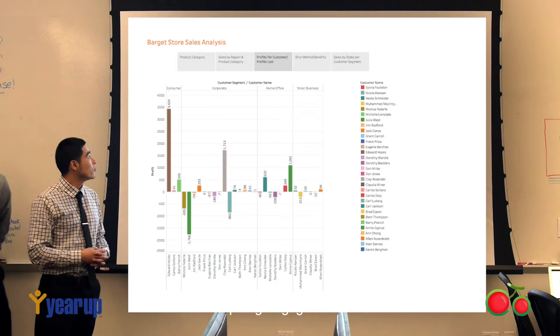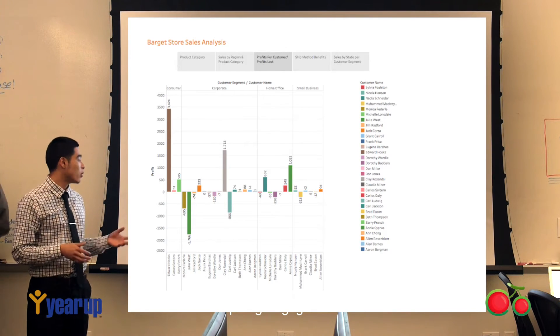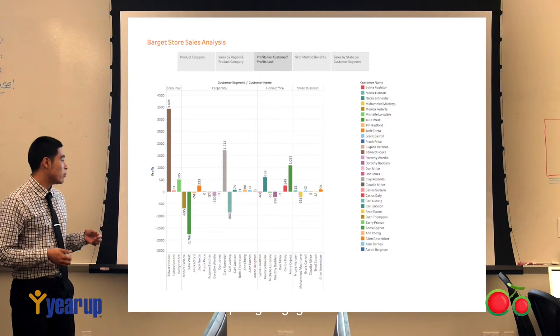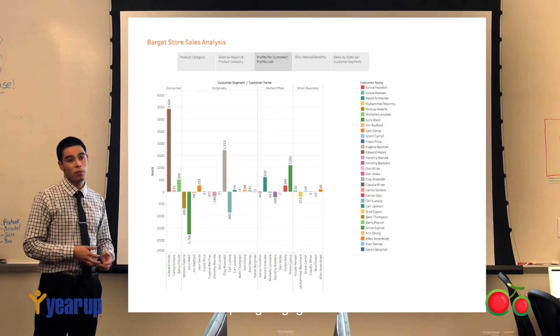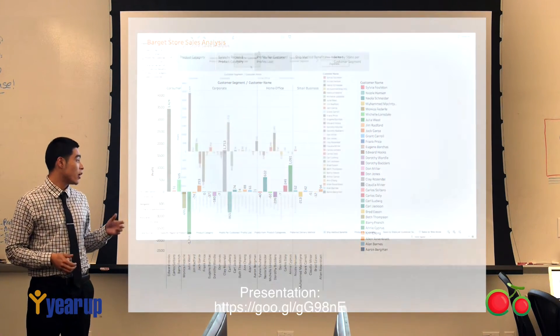For this slide, I went deep into seeing where we were losing money and where we were making profit. I went even deeper and found out the customer's name, so that our salespeople are informed in terms of who they're dealing with, why they're losing money, and areas we can improve.